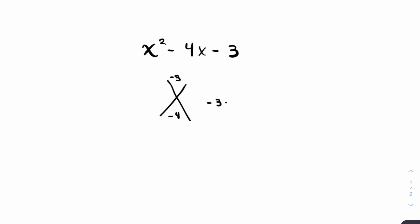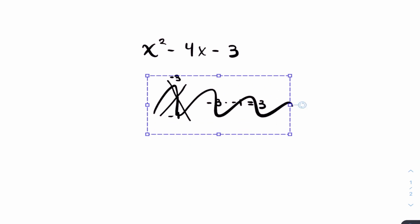You have to think of two numbers that add up to give you negative 4 and multiply together to give you negative 3. Well, there are no two numbers that exist. Negative 3 and negative 1 obviously don't work, so let's take that out.